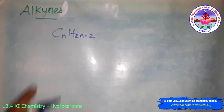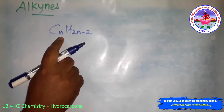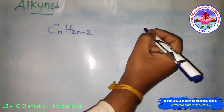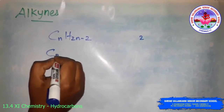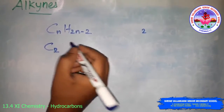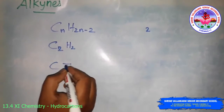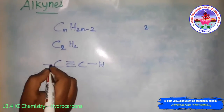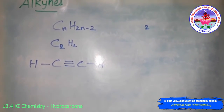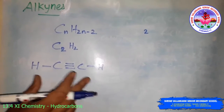Here, N indicates the number of carbon atoms. Suppose N is equal to 2, this will be C2 and H2×(4-2), that will be H2. That means C triple bond C, bond H, bond H. So this is the basic compound of the alkyne. The common name is acetylene and the IUPAC name is ethyne.